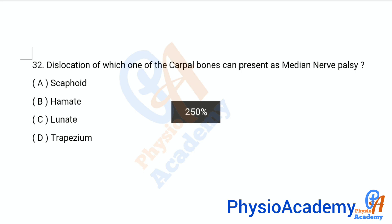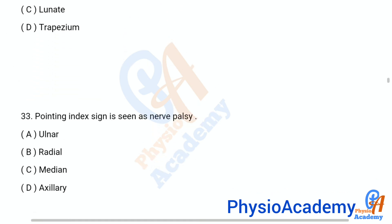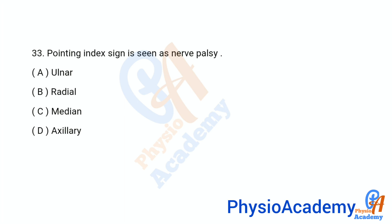Question number 32: Dislocation of which one of the carpal bones can present as median nerve injury? Option A scaphoid, option B hamate, option C lunate, option D trapezium. The correct answer is option C, lunate.